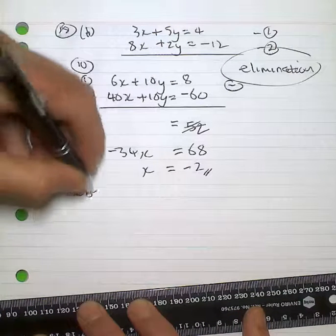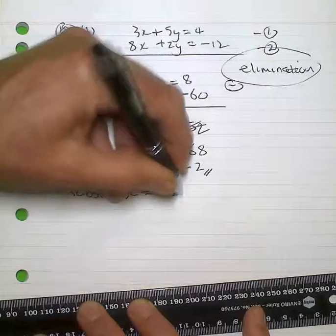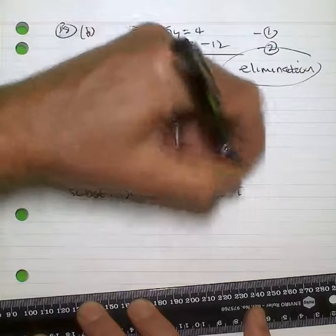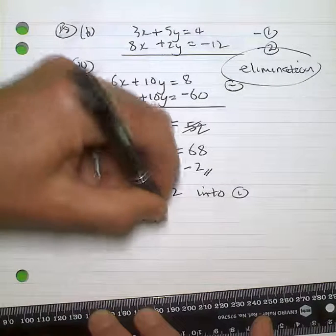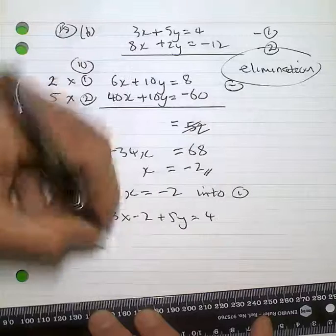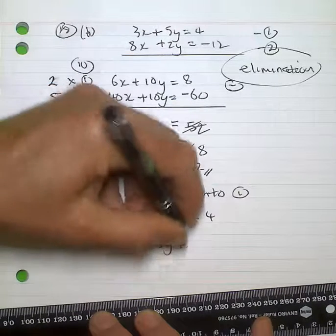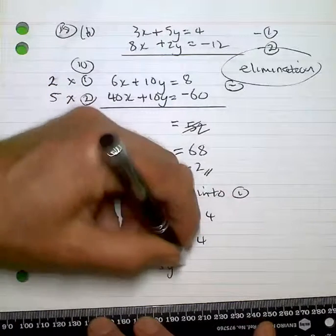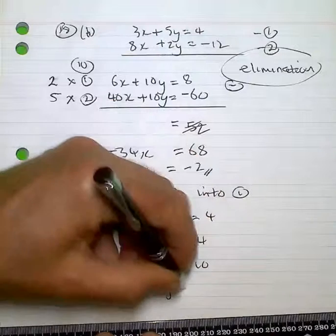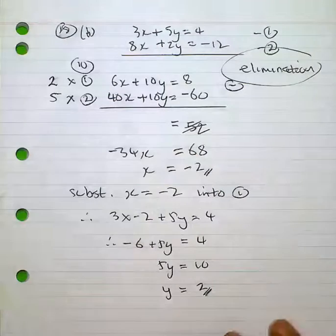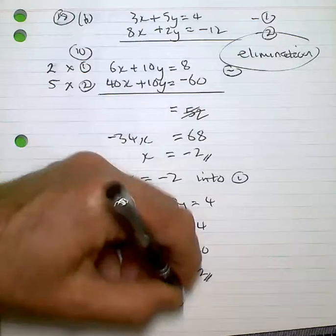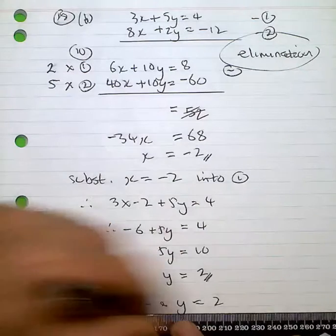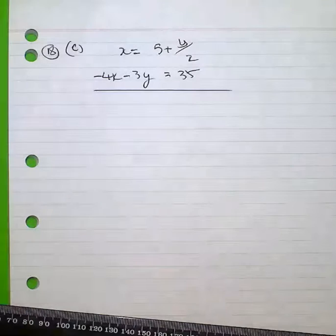I then substitute x = -2, and I'll substitute that into equation 1. So y = 2. Therefore, my answer is x = -2 and y = 2.